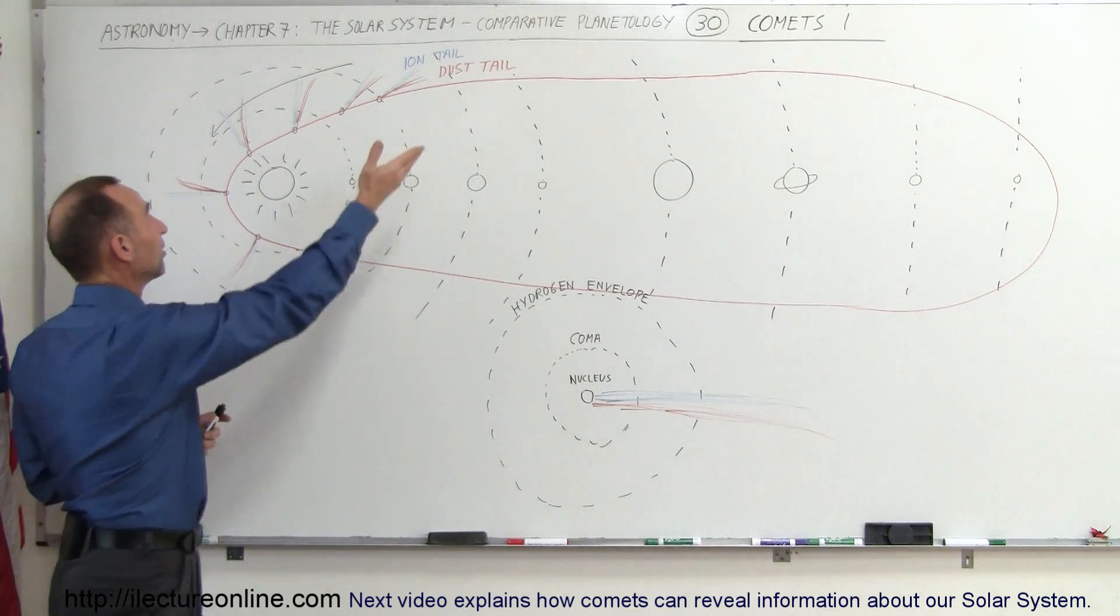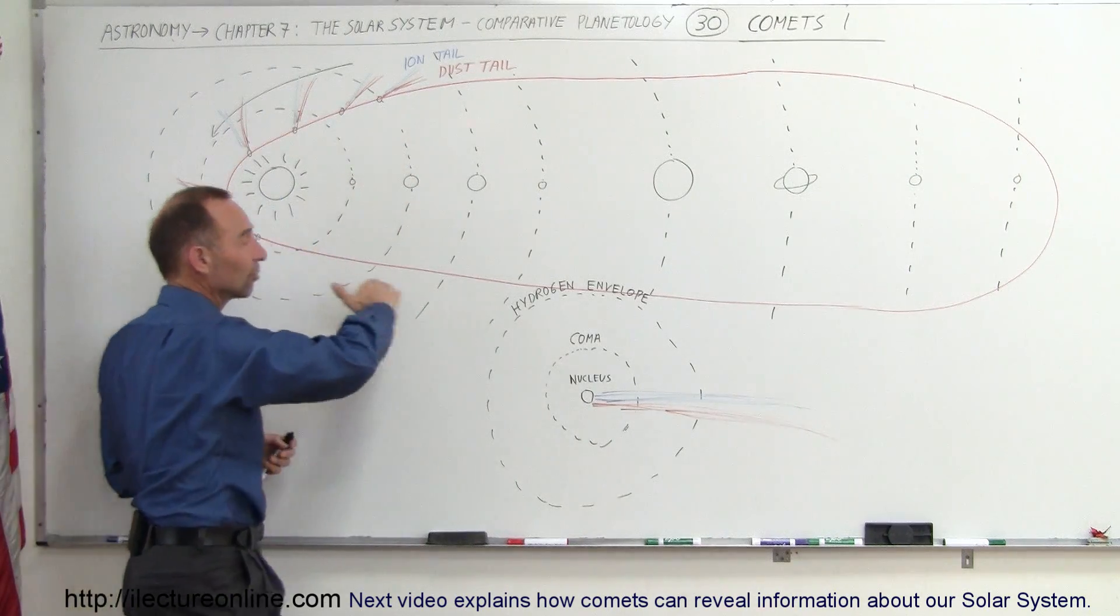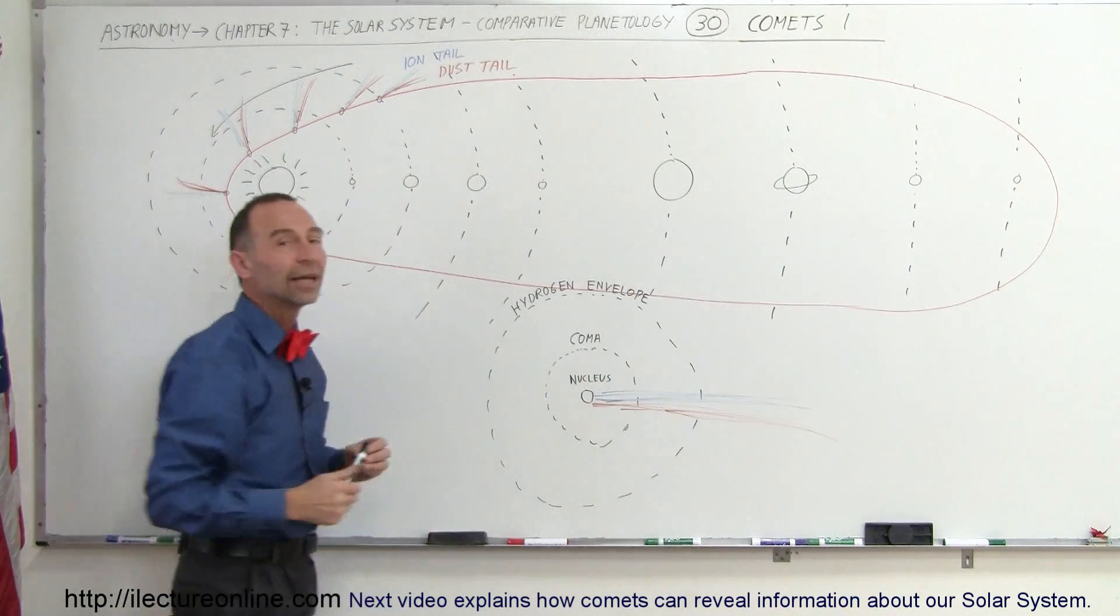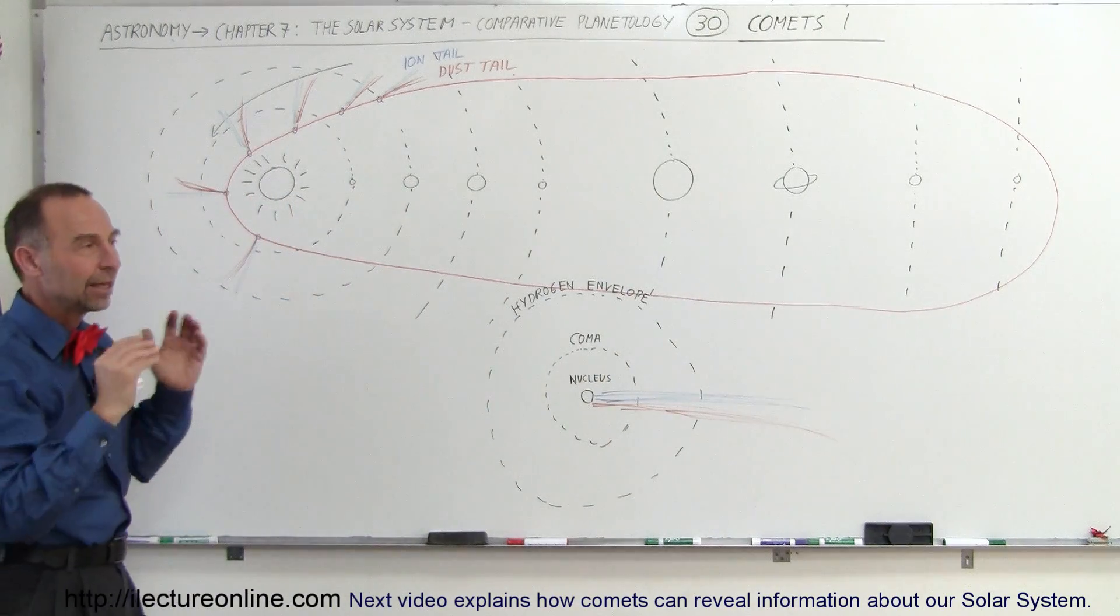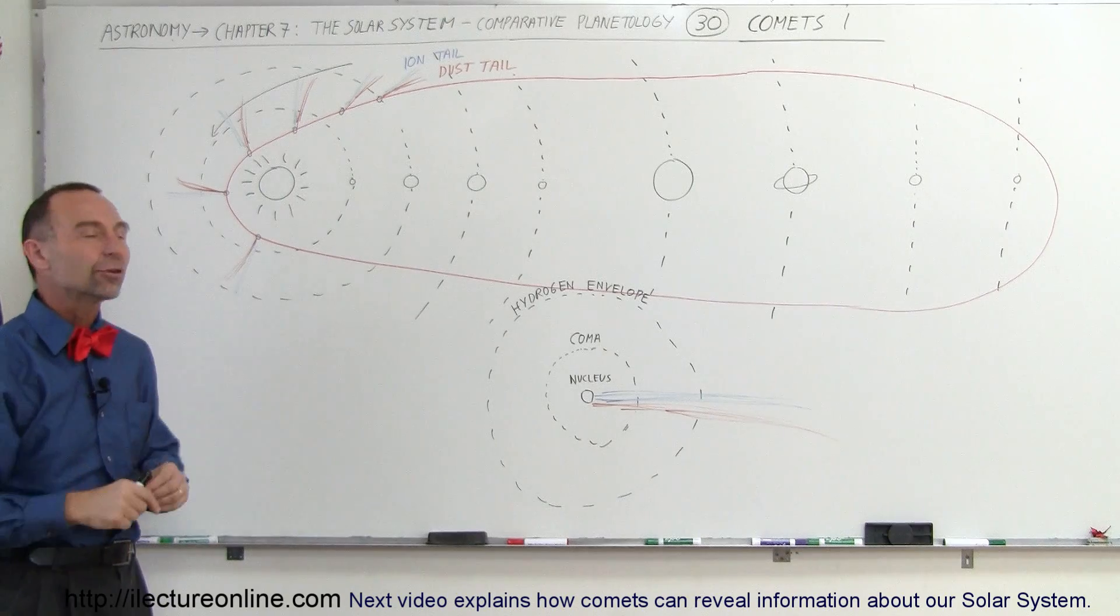When they make a trip around the sun, they basically graze the sun on one side and they go way back out in the far reaches of the solar system into the Kuiper belt and sometimes all the way out to the Oort cloud.